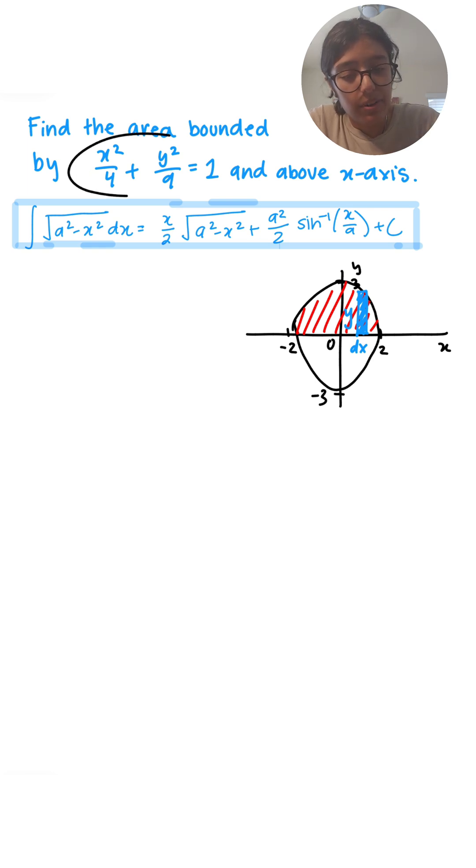In order to find the value of y we have to manipulate this equation a little bit. So I'm going to say y squared over 9 equals 1 minus x squared over 4. Just took the x squared over 4 to the other side. And from here I'm just going to solve for y. It's basically just algebra.